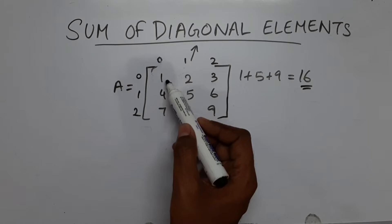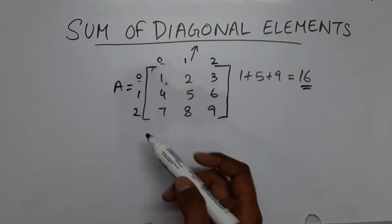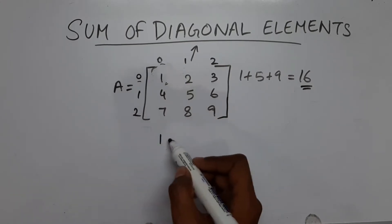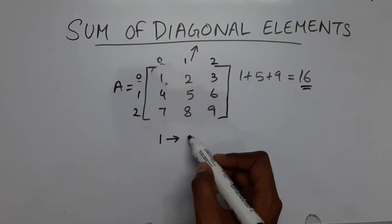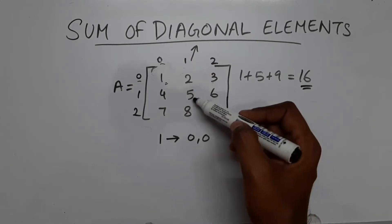So let's see what is the row and column for this element. This is 0th row and 0th column. So 1 is present at row number 0 and column number 0. Now let's see for this 5.